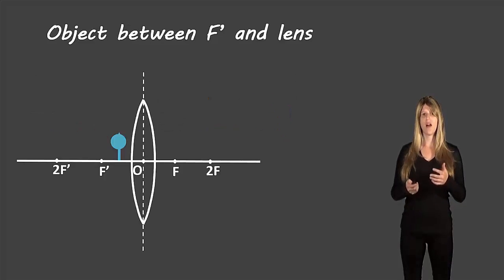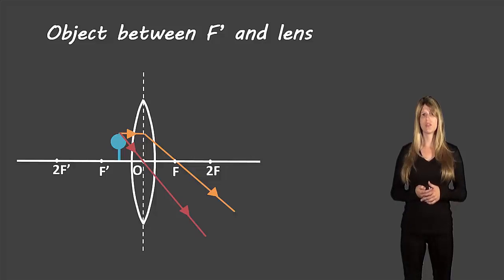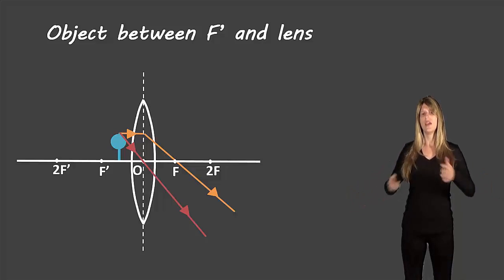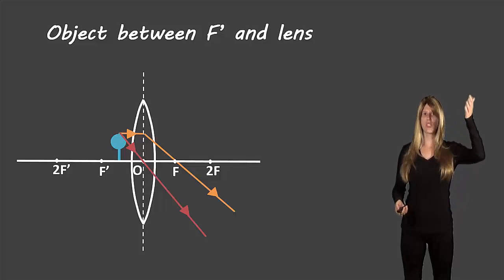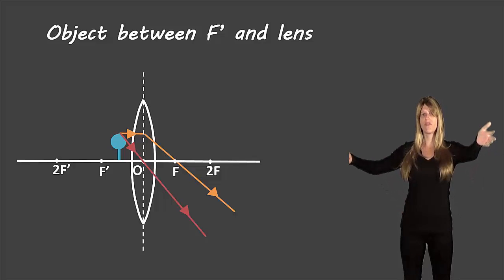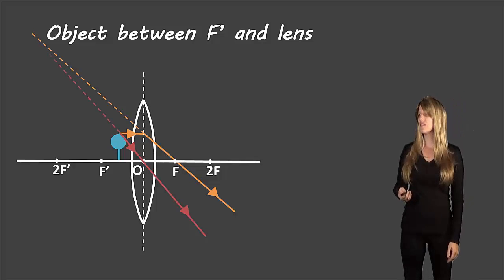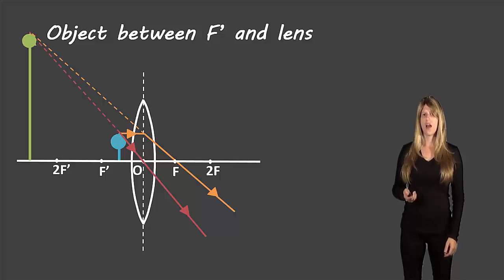Finally, let's see what happens when the object is between f prime and the lens. Our first light ray will be parallel to the principal axis and will refract through f. Our second will move through the optical center and continue in a straight line — the same two rules as before. The difference here is that our refracted rays are actually traveling away from each other, so they won't cross on that side of the lens. However, if we backtrack those refracted rays to the original first side of the lens, we'll see that they do cross. The orange line traveling backwards and the red line both cross on the other side, and where they cross is the tip of the balloon.